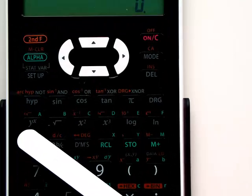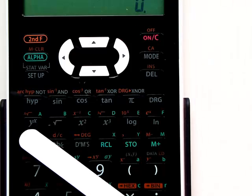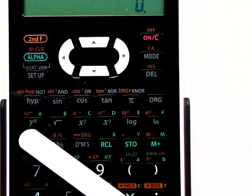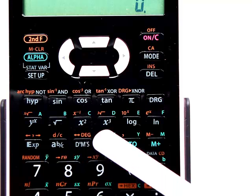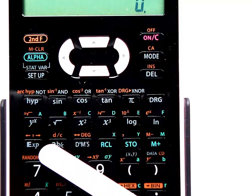And this key is used when we want to calculate using an exponent higher than 2 or 3, which we saw earlier with the x squared and the x cubed keys.